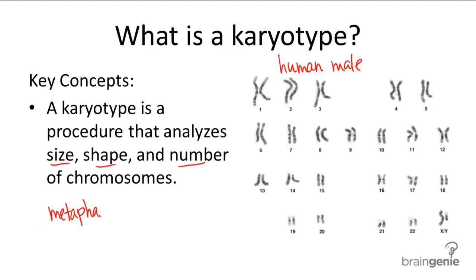Metaphase is the phase when DNA is fully condensed into chromosome form. You can see in this human karyotype that we have 23 pairs of chromosomes, 22 of which are autosomes, which just means they aren't sex chromosomes.